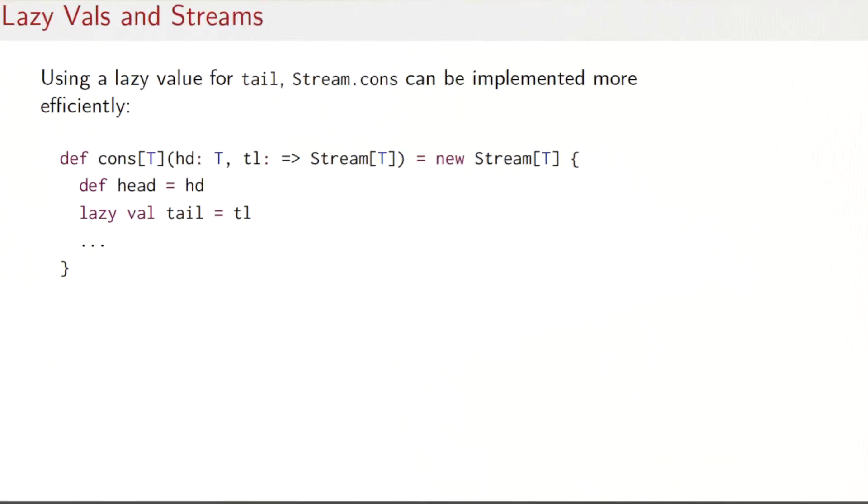Using lazy val, we can adapt our implementation of Stream.cons to make it more efficient. The change is again very simple: the only thing that changed is that instead of a def tail equals tail, we use a lazy val tail equals tail. And that's all that's needed. With this change, it means that as before we will evaluate tail only when it's first demanded, but unlike it was before we will reuse the evaluation of tail every time after the first one, so we will avoid unnecessary repeated computations.